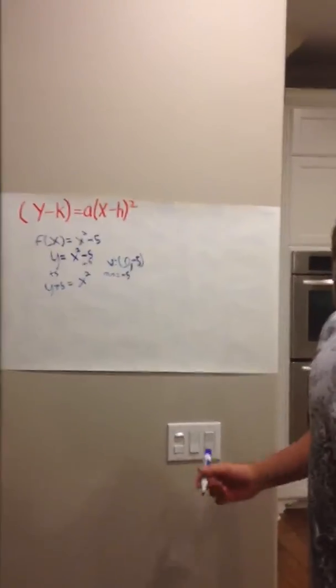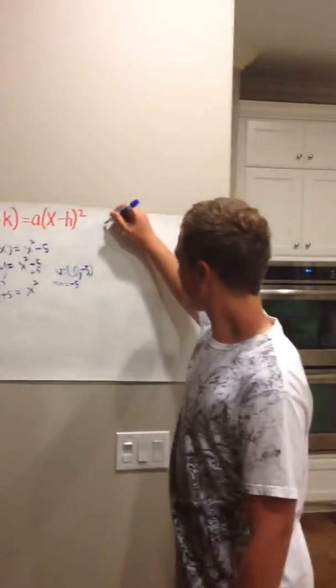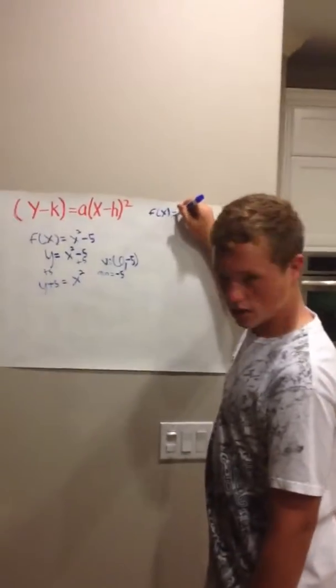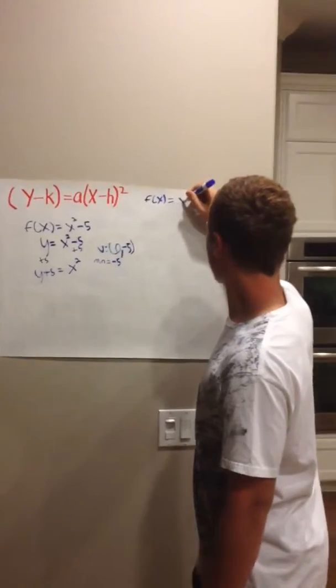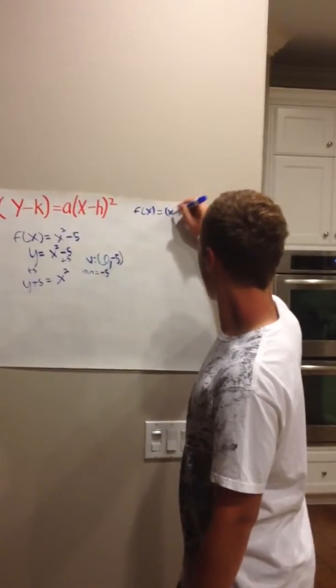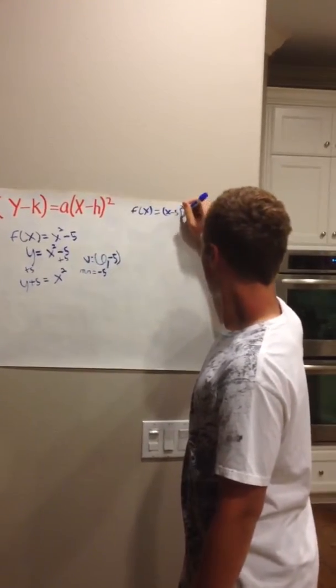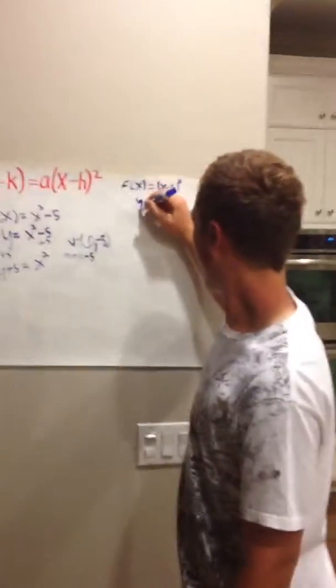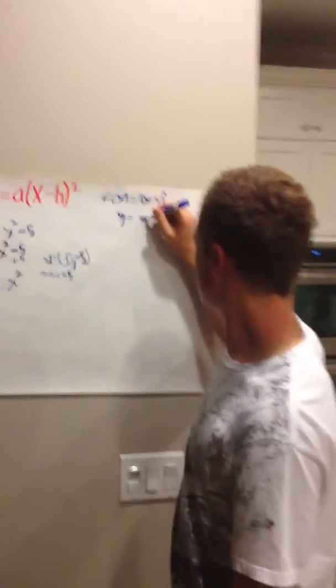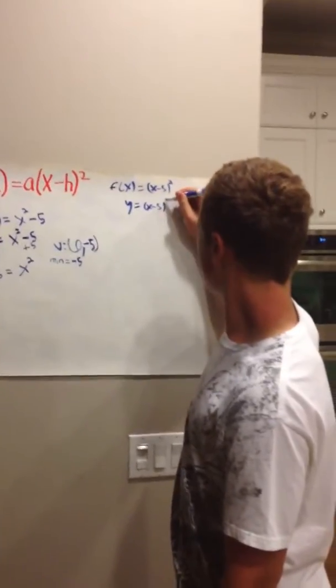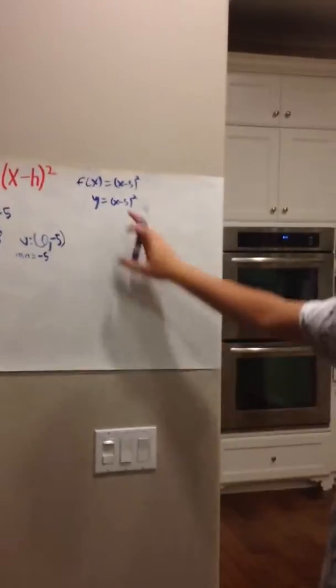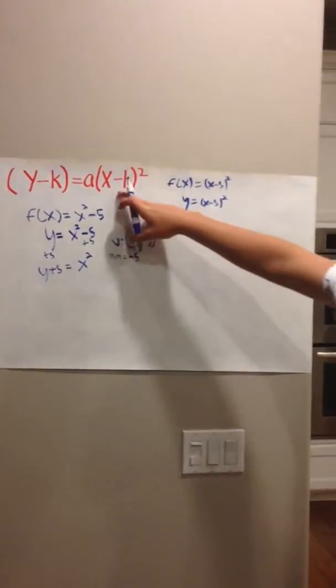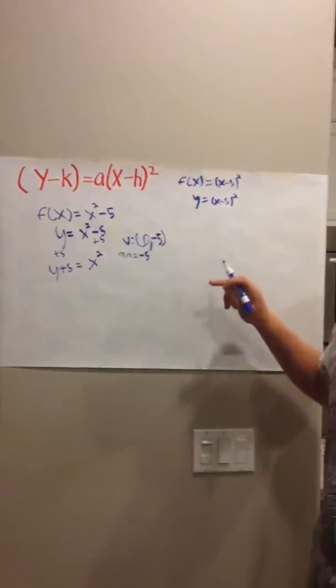Your next problem will be f of x equals x minus 5 squared. Again, you can change your f of x to y equals x minus 5 squared. And if you see the similarities, you can find out that this is already in your parabolic form.